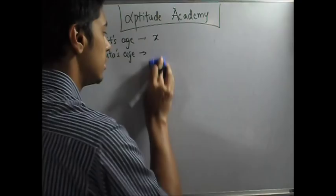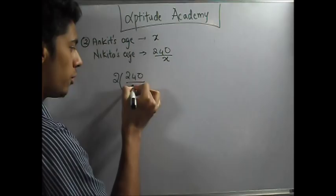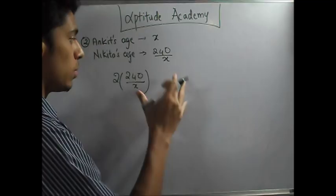The next statement says that twice Nikita's age - that is 2 times (240 by x) - is 4 more than Ankit's age. What does 4 more than Ankit's age mean? If you remove Ankit's age from Nikita's doubled age, you'll be left with 4. So minus Ankit's age equals 4.